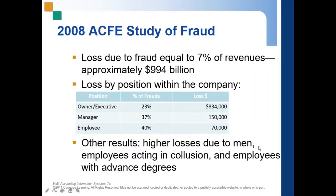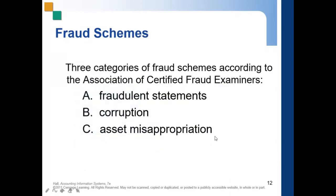Other results from the study include higher losses due to men, meaning men are more likely to commit fraudulent activities. Also noted are employees acting in collusion. For example, Employee A knows that Employee B will do something, and they agree to share the proceeds. This increases the opportunity to commit fraud, making collusion more likely to occur.